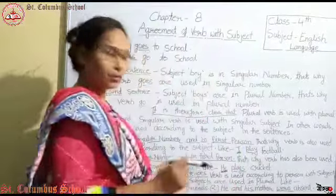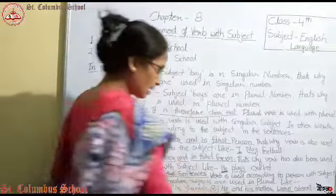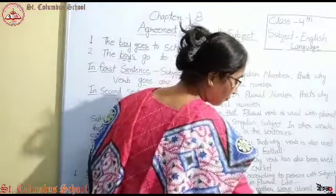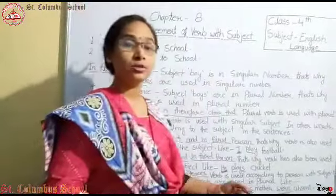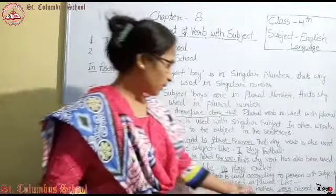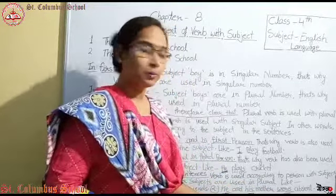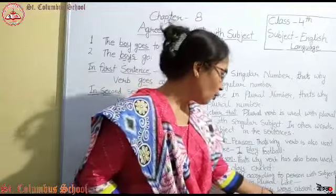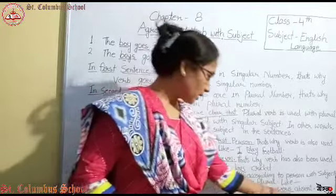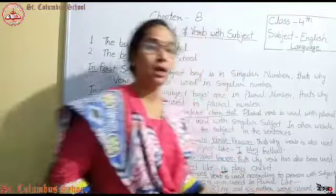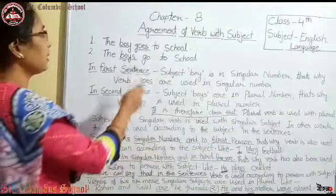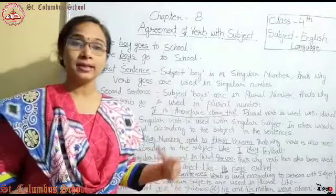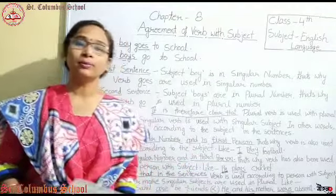Next example: 'He and his mother' - यहाँ he third person है, and more than two subjects हैं। तो was नहीं, were use होगा। 'He and his mother were absent' - वो और उसकी मदर absent थीं। So आपका Agreement of Verb with Subject यह है: जब भी verb use करते हैं, subject के according ही verb को use करते हैं।